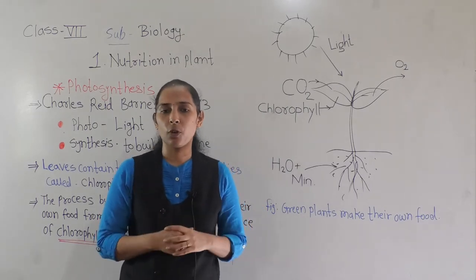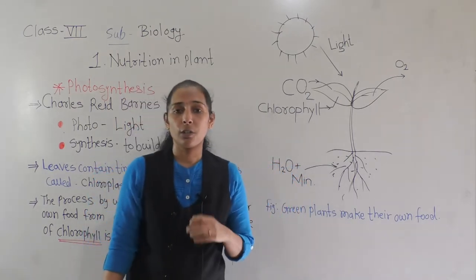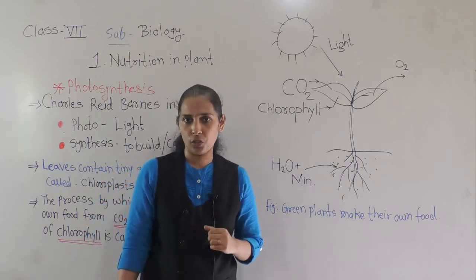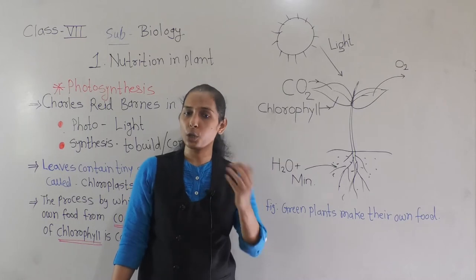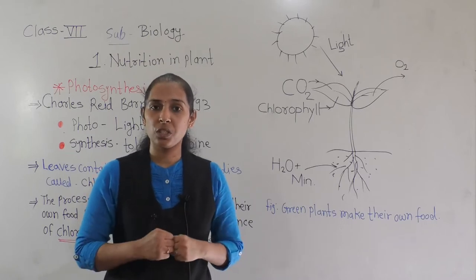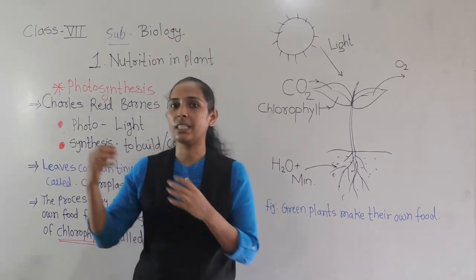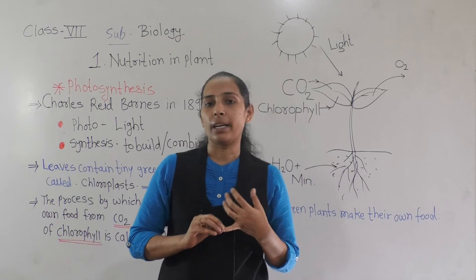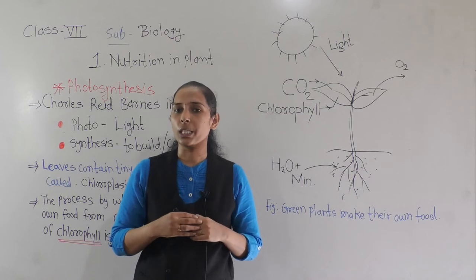Now let's move to the next point from the lesson: photosynthesis. We discussed that green plants follow the autotrophic mode of nutrition because they make their own food. Today we will answer how green plants make their own food, which raw materials they use, and from where they get all these raw materials.